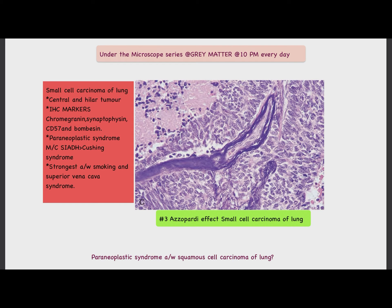In today's video, under the microscope series at Gray Matter, we are going to discuss the Azzopardi effect, which is characteristic of small cell carcinoma of the lung. The Azzopardi effect is basophilic staining of the vascular walls — this is the blood vessel — due to leaked out delicate nuclear material.